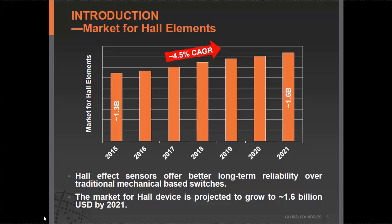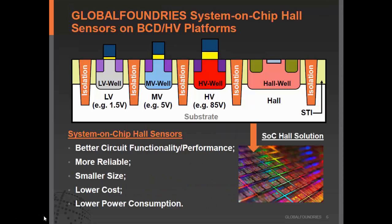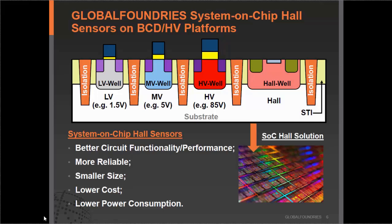Because of the strong market demand and customer requirements, GlobalFoundries developed our own Hall device offering. What is more, we not only provide stand-alone Hall devices, but we also integrate them with other offerings in our wide range of libraries. For example, we can integrate the Hall device with basic low-voltage devices, logic devices, medium-voltage devices, and also with our high-voltage device, which can go up to 85 volts.